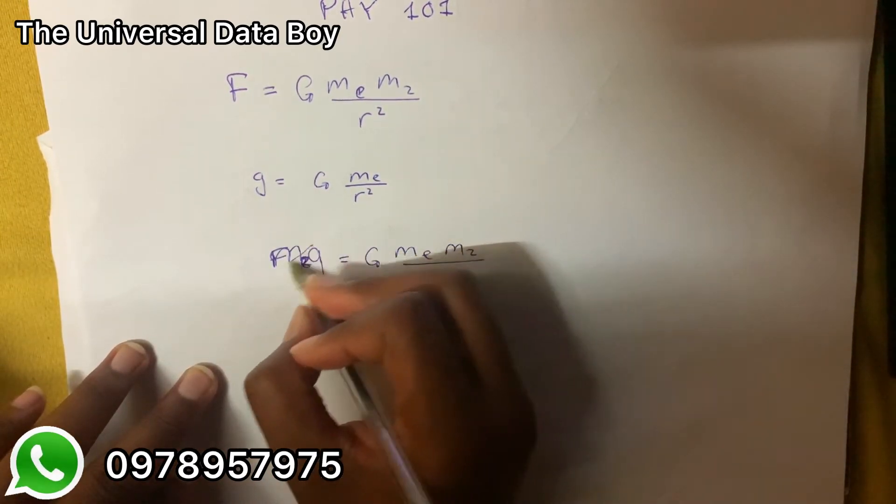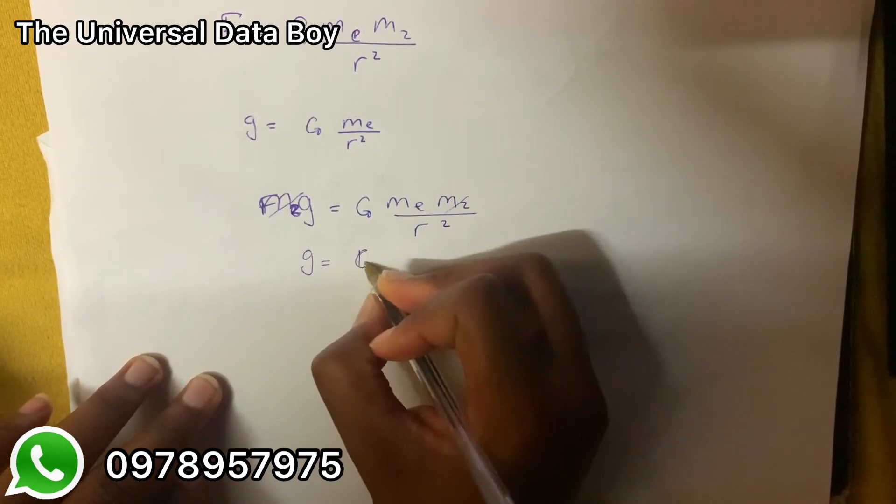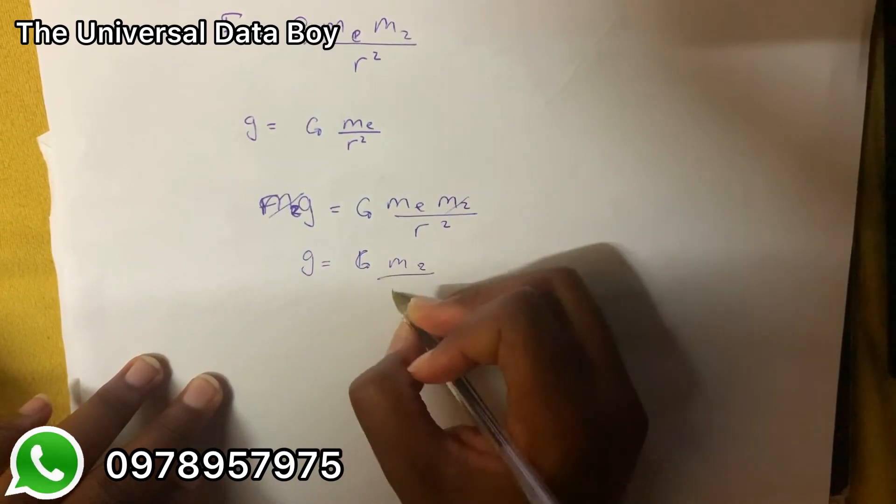Now when this m and this m cancel out, we're going to have the gravity being equal to G m_e over r squared.